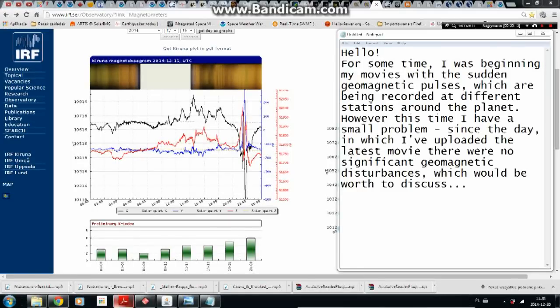Hello. For some time I was beginning my movies with the sudden geomagnetic pulses which are being recorded at different stations around the planet. However, this time I have a small problem. Since the day in which I've uploaded the latest movie, there were no significant geomagnetic disturbances which would be worth to discuss.